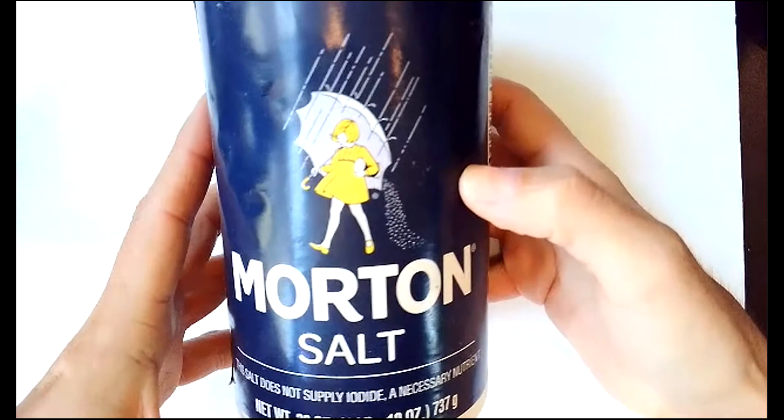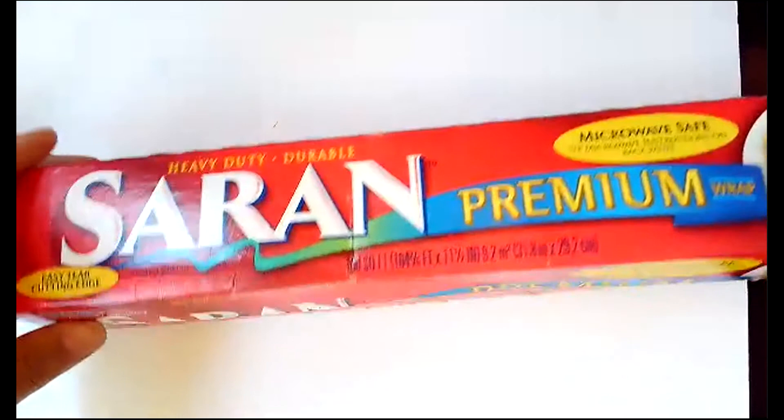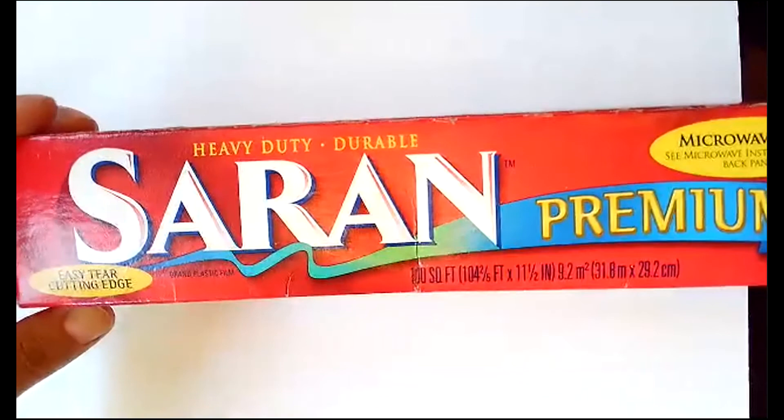Some table salt. You don't need the whole container like I have here, just your salt shaker will do. Last but not least saran wrap or plastic wrap whichever you have, even if you just have some packaging plastic thrown into the recycle you can yank that out and use that just as well.